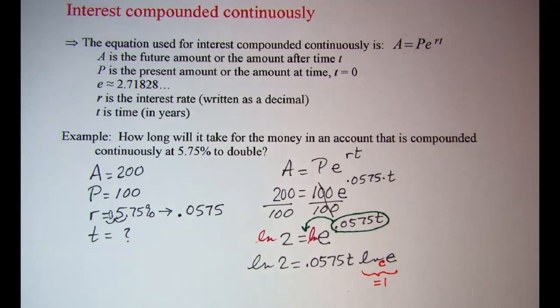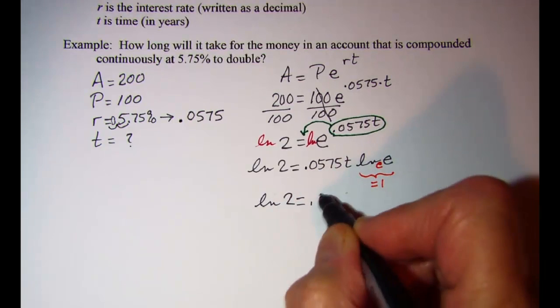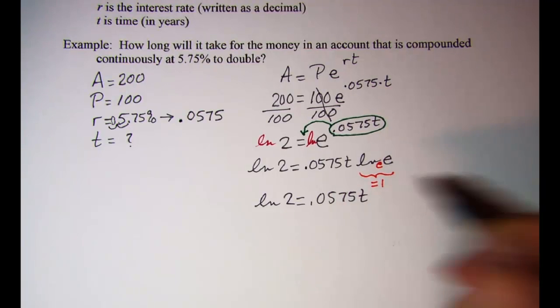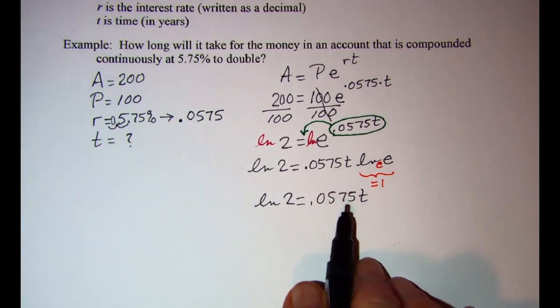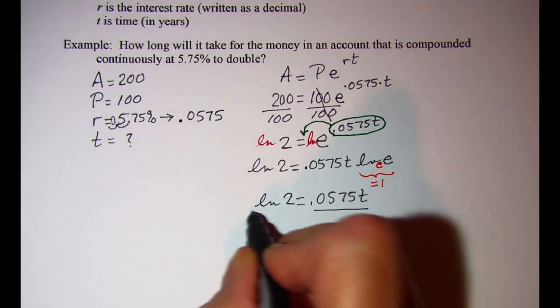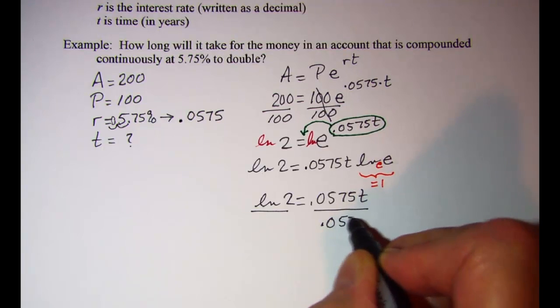So now my problem becomes ln2 equals 0.0575 T. Since this decimal is multiplied by T, to isolate the T, I need to divide both sides by that decimal, 0.0575.